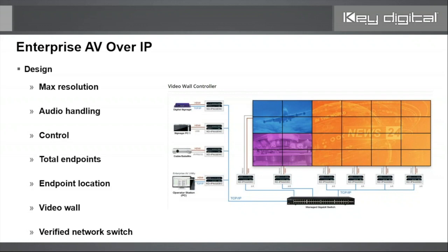With AV over IP there are some very important design considerations. Number one: do you want 4K or 1080p? We have two flavors of product at Key Digital. Number two: what are you going to do with audio? Not all products have embed on both the encoder and decoder side, and some products have higher latency than others. How many unique zones of audio do you need — a mix of all sources, or one source per zone at a time?